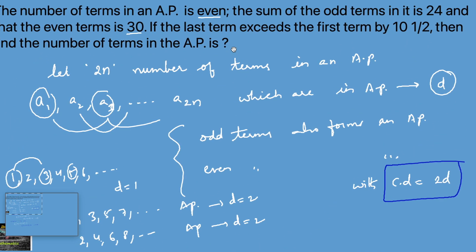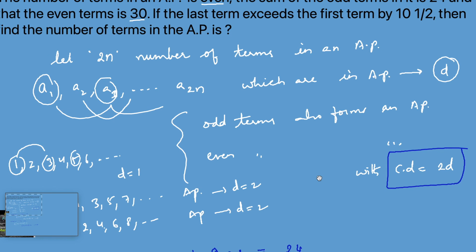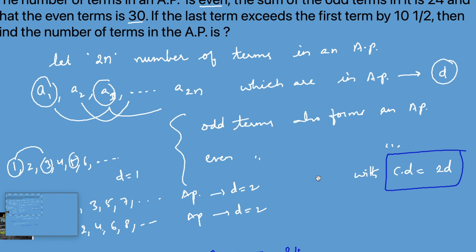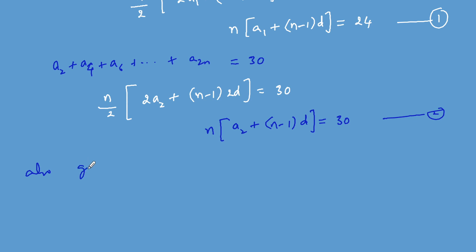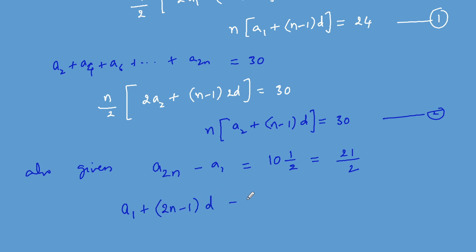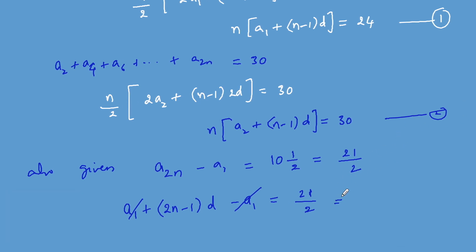It is also given that the last term exceeds the first term by 10 and a half, i.e., a(2n) - a1 = 21/2. Since a(2n) = a1 + (2n-1)D, this gives (2n-1)D = 21/2. Call this Equation 3.